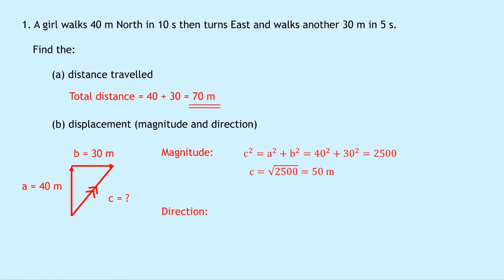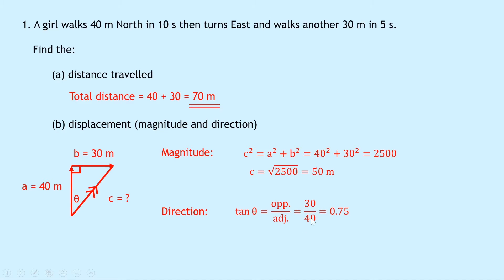To find the direction now, we need to consider our angles in the triangle. We can label our right angle, and then label our angle theta. The reason I've chosen this angle and not the other one is because we always choose theta to be the one next to the starting point. You might use x instead of theta — that's absolutely fine. For the direction, we're going to use tan theta equals opposite over adjacent. Substituting in the numbers, the opposite of angle theta is 30 and the adjacent is 40, so it's 30 over 40, which is equal to 0.75. Now we need to find what theta is, so we need to do shift tan of that answer, and if you put that into your calculator you get an answer of 37 degrees.